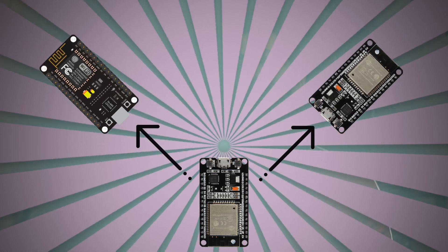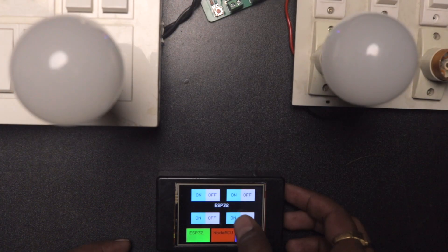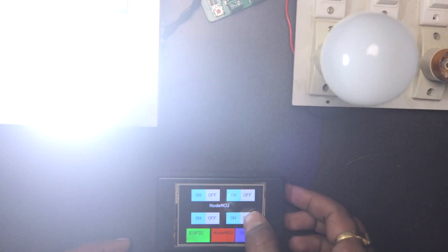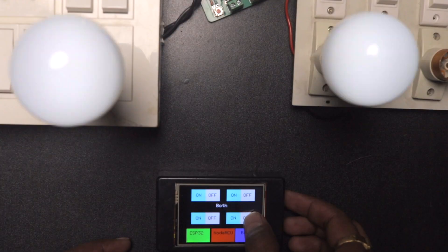This is called one-to-many configuration, and by the end of the video we'll be making a very interesting project in which we'll be able to control multiple devices — maybe one at a time or maybe all the devices at a single time — using one-to-many configuration of ESP-NOW.